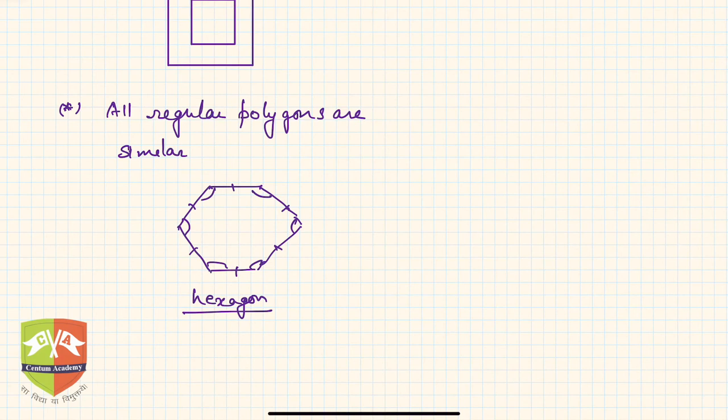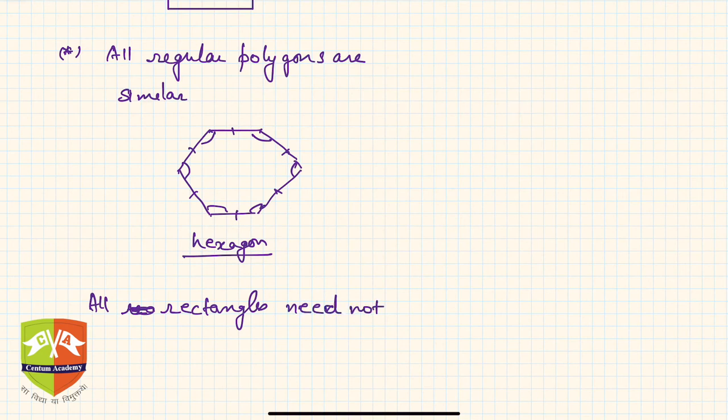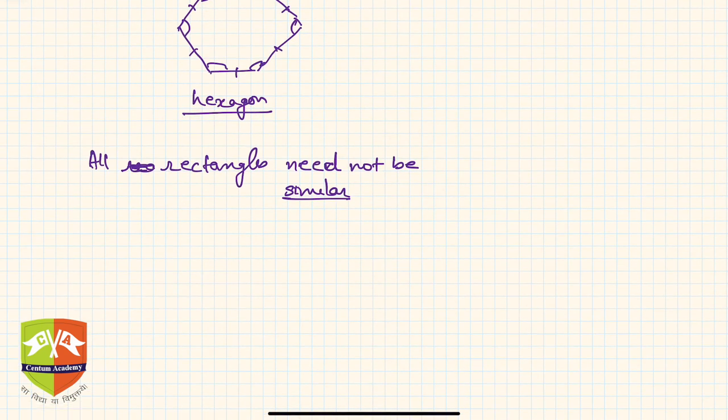Then what would be non-similar items? All rectangles need not be similar. They may be, they might not be. For example, you can see your door panel and your window panels, or your computer screen, or the top surface of the notebook—all are rectangles but they need not be similar, isn't it? Similarly, two ellipses need not be similar.